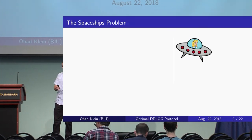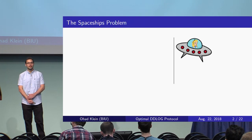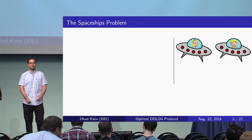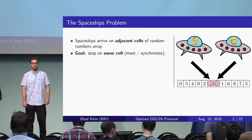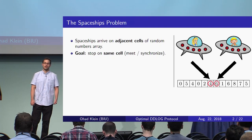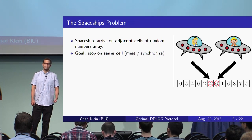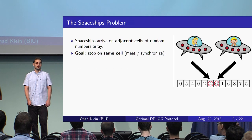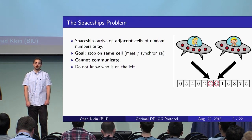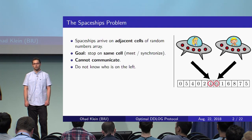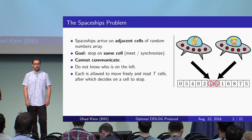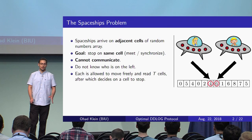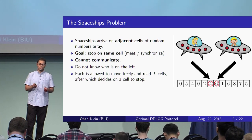I want to start with a problem, and we will later see how this relates to cryptography. In this problem, Alice and Bob are two spaceships arriving on a cell inside an array filled with random numbers. Their goal is to stop on the same cell, or to meet. What Alice and Bob cannot do is communicate, and they do not know which one of them is to the left of the other. What they can do is each of them is allowed to read cells from the array and then decide on what cell to stop on.